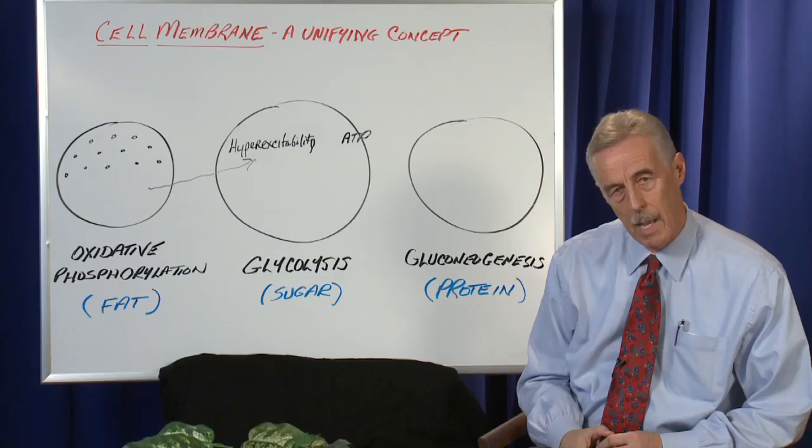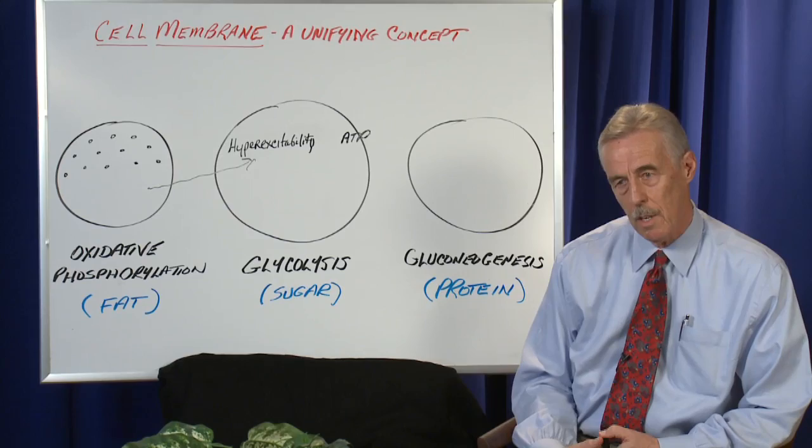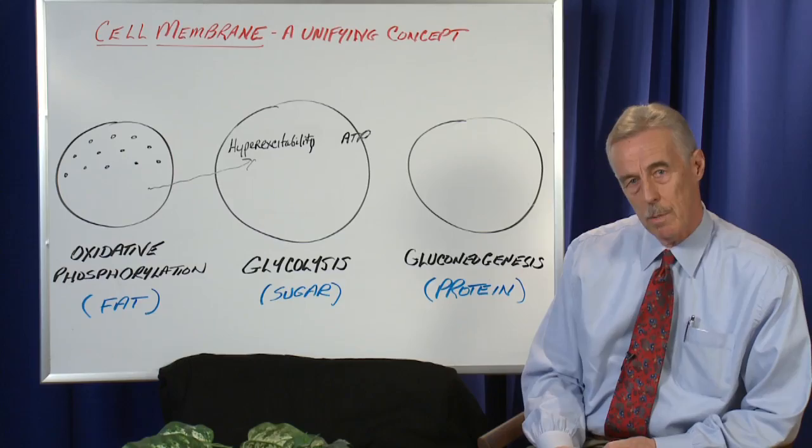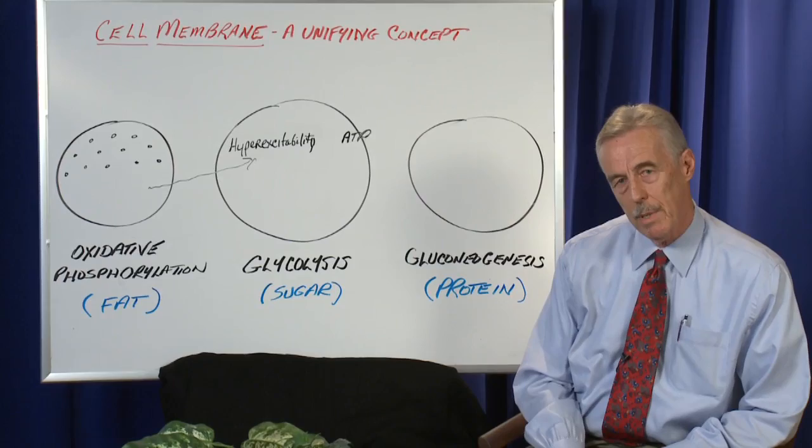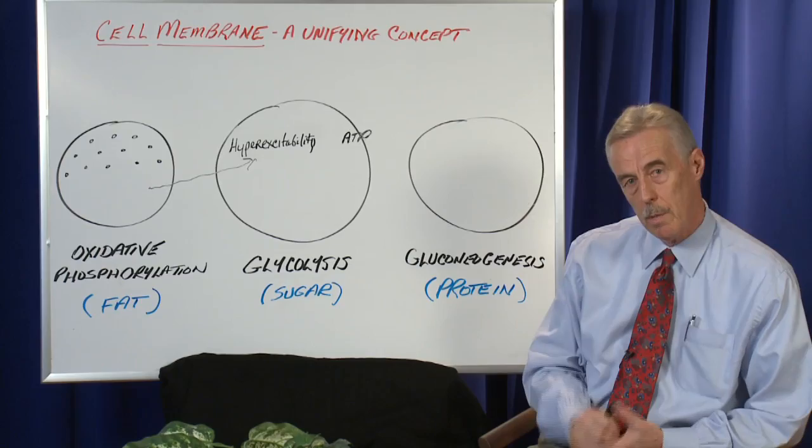Now there's good news and bad news about glycolysis. It does provide an emergency source of energy, but it is very inefficient. Glycolysis provides about 5% of the efficiency that oxidative phosphorylation does. In addition to using sugar, it also employs the sodium-potassium pump, which increases electrical activity, and electrical activity causes a hyperexcitability of the cell membrane.